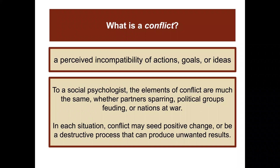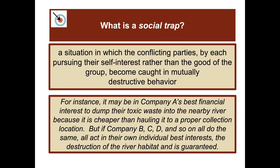A conflict is a perceived incompatibility of actions, goals, or ideas. To a social psychologist, the elements of conflict are much the same whether between partners, political groups, or nations at war. Conflict may seed positive change or be a destructive process that produces unwanted results. A social trap is a situation in which conflicting parties, by each pursuing their self-interest rather than the good of the group, become caught in mutually destructive behavior. For example, it may be in company A's best financial interest to dump toxic waste into a nearby river, but if companies B, C, D, and so on all do the same, the destruction of the river habitat is guaranteed.